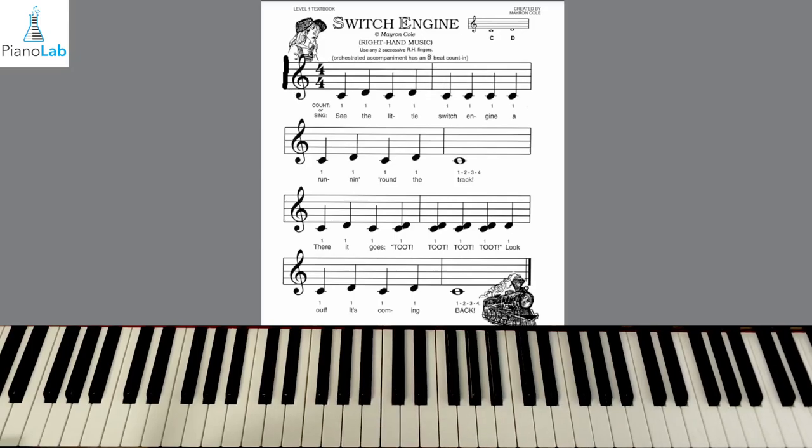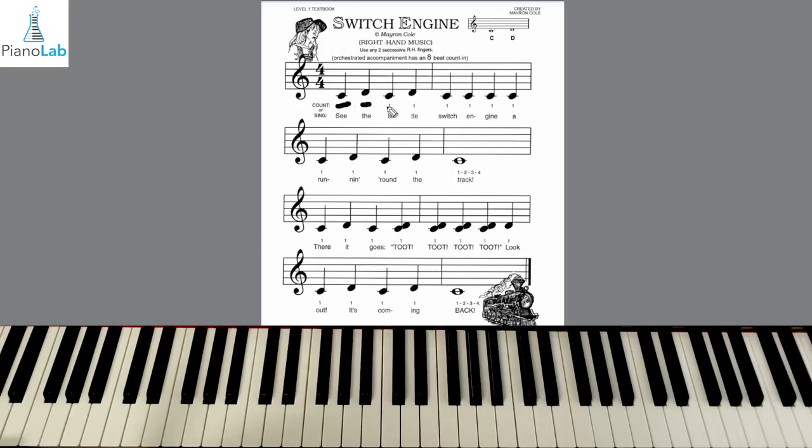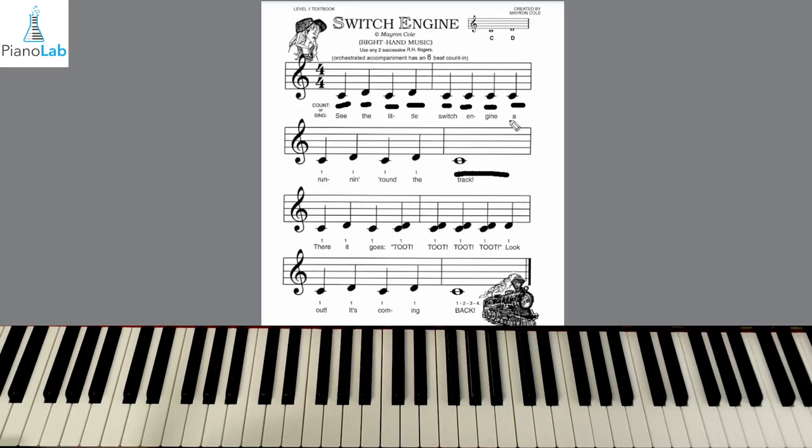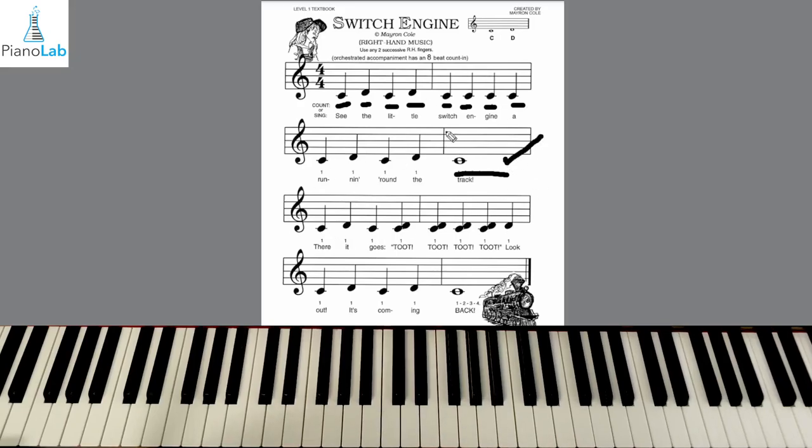And remember, 2 bar lines make up 1 measure. So let's do some counting. 1, 2, 3, 4, there's 4 beats. Let's do some more counting. 1, 2, 3, 4, there's 4 beats as well. How about this last measure down here? 1, 2, 3, 4. A whole note worth 4 beats. That checks out as well. That's also a measure, which is why we need those 2 bar lines.